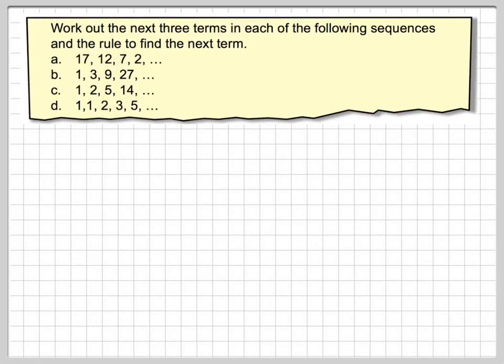Hello there, welcome to the first video on the series of sequences. Work out the next three terms in each of the following sequences and the rule to find the next term. So we've got 17, 12, 7, and 2. Just write those out, the common difference between each one. The three dots means that the sequence continues forevermore.